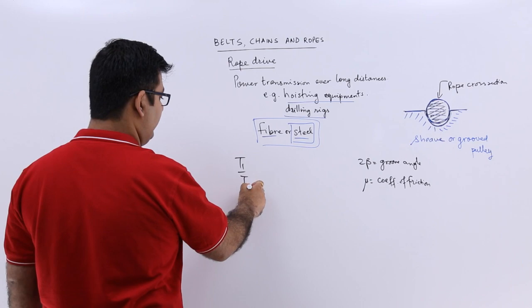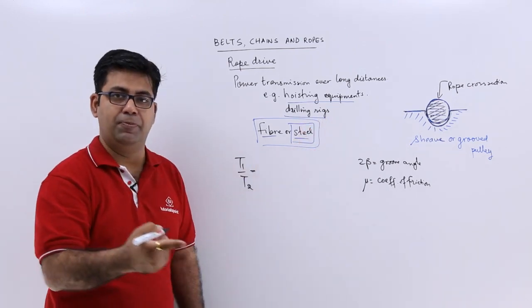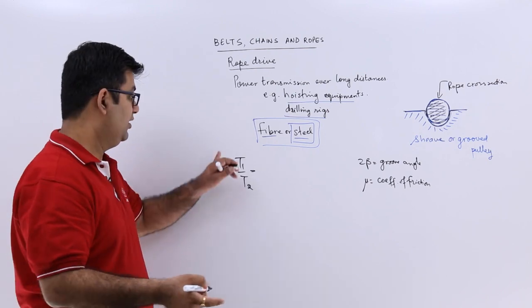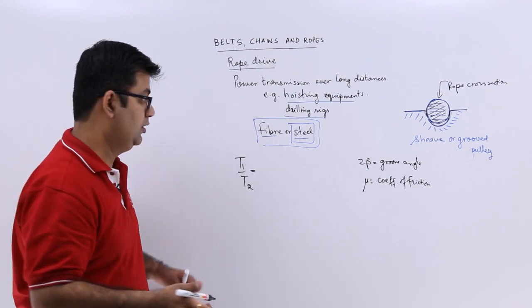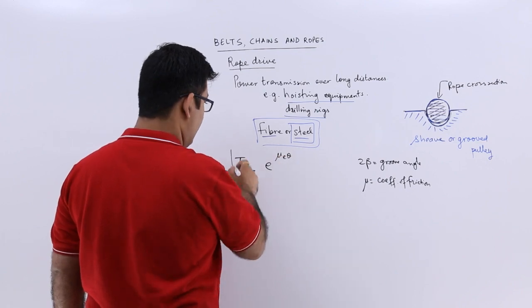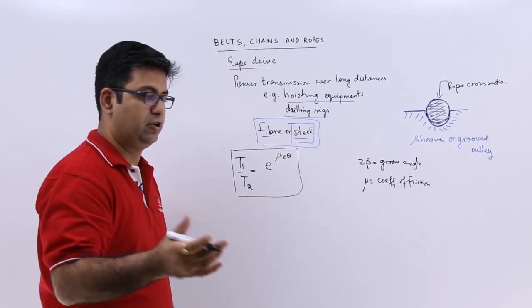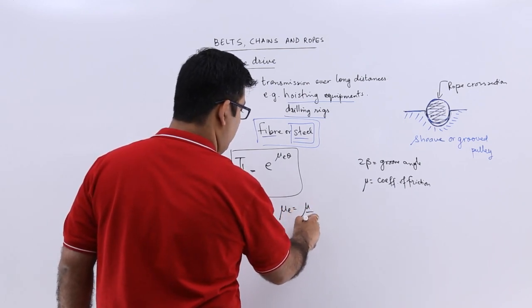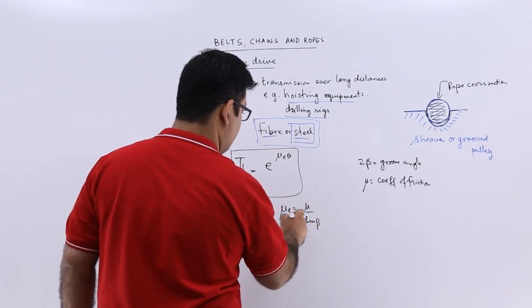So again, similarly if you have to find out the ratio of tensions in rope drive, it will take the same course as the formula for a V belt drive. So it will be e to the power mu e theta, where mu e is the virtual coefficient of friction. So this is equal to mu upon sin beta.